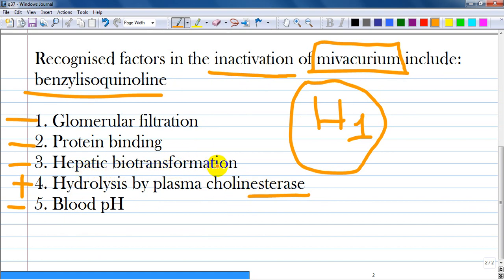Hepatic biotransformation is a pathway followed by aminosteroids undergoing hepatic metabolism. Protein binding: practically every drug or component in the blood is bound to proteins like alpha-1-acid glycoprotein or albumin.